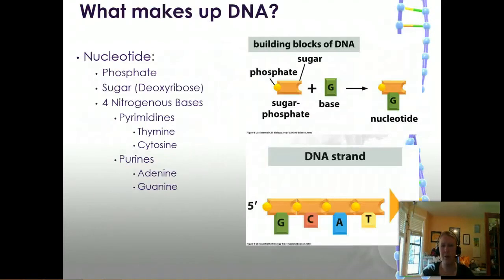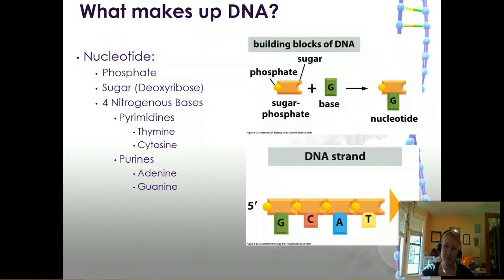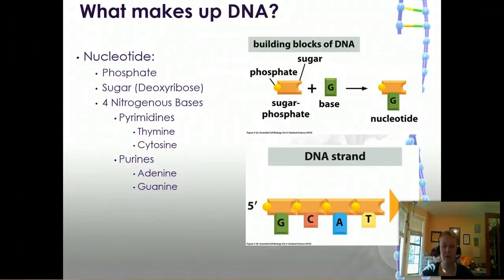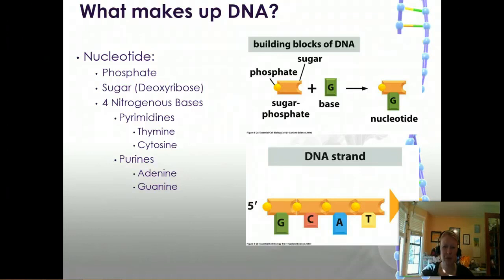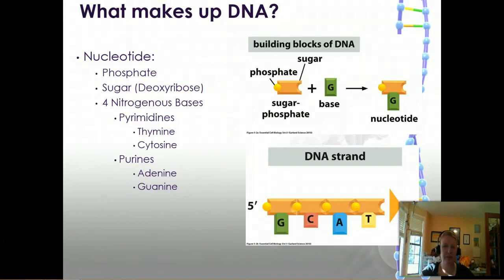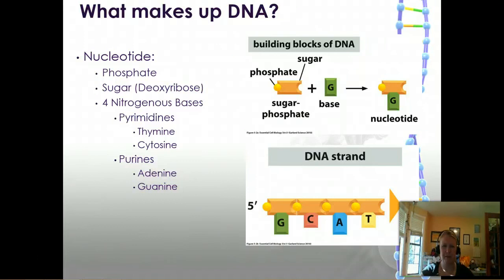So let's talk about what makes up DNA. The monomer of DNA is the nucleotide, which is the most basic building block, and it contains the phosphate, the sugar, and one of four nitrogenous bases. You may have heard the term nucleoside — the nucleoside is the sugar and the base lacking the phosphate. We really only care about nucleotides here, so focus on that, but it's good to be aware of that definition difference.